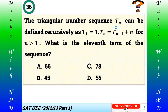Question 36: The triangular number sequence T(n) can be defined recursively as T(1) = 1, T(n) = T(n-1) + n for n greater than 1. What is the 11th term of the sequence? A) 66, B) 45, C) 78, D) 55. As usual, please try to do the question by yourself and check your answer with my answer.